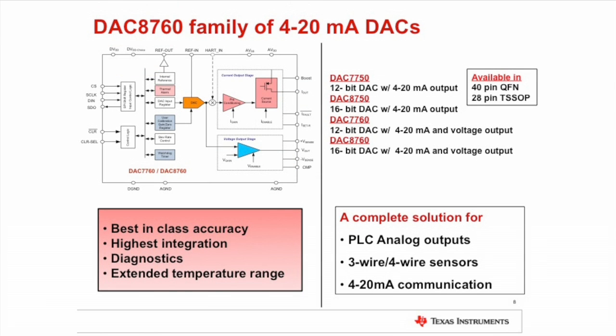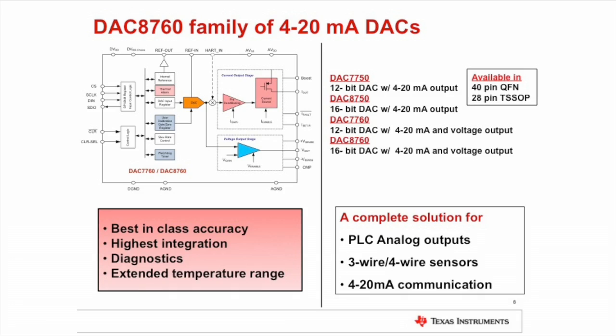The DAC8760 family of 4 to 20 milliamp DACs has both a voltage and a current output, best-in-class accuracy, the highest level of integration, and a number of diagnostic features. There are four different parts in two different packages, all rated for an extended temperature range. The DAC8760 is a complete solution for PLC analog outputs, three-wire and four-wire sensors, or for any end equipment implementing 4 to 20 milliamp communication. For more information, refer to the link shown here.